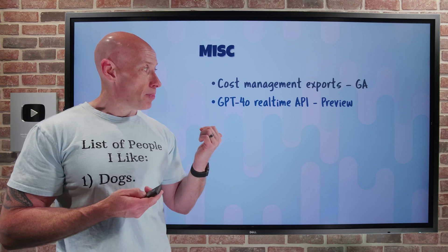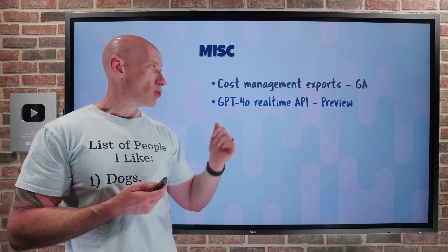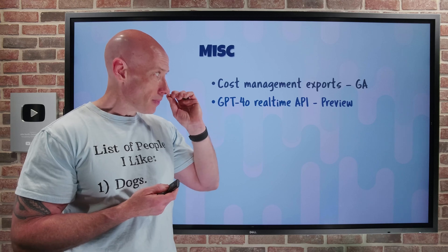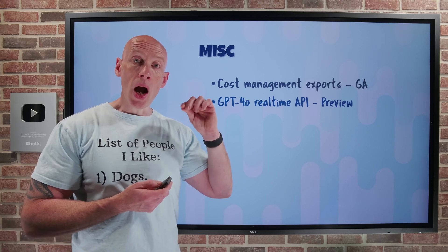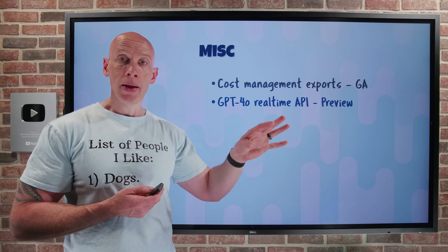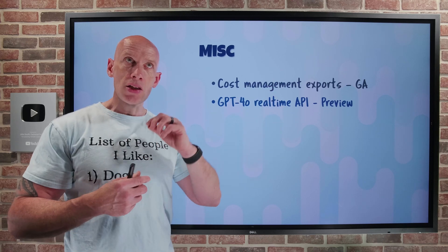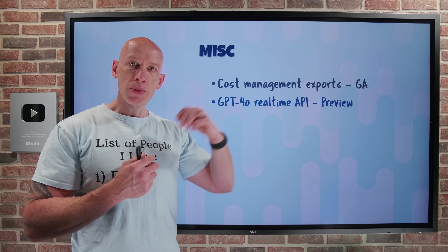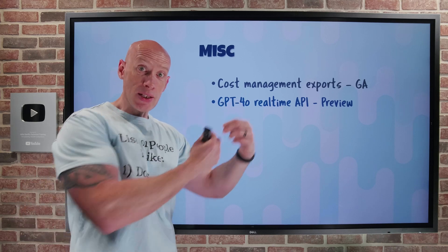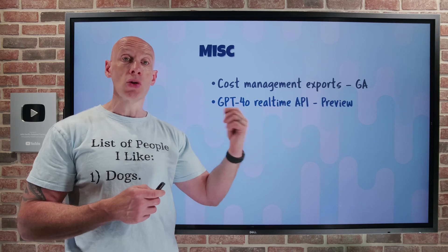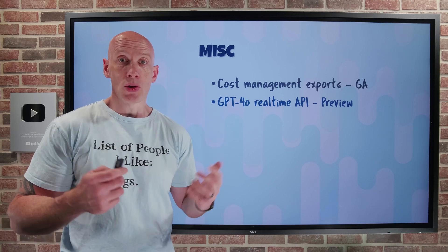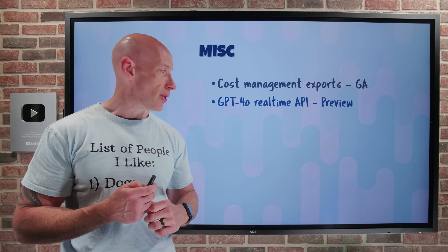GPT-4.0 real-time API is now available in preview. For the real-time GPT-4.0 models, you can now use WebRTC — real-time communication — in addition to WebSocket. The whole point is it's a real-time API for speech and audio that allows for really low-latency speech-in-speech-out conversational interactions. So if your app wants to use WebRTC, you can now do that.